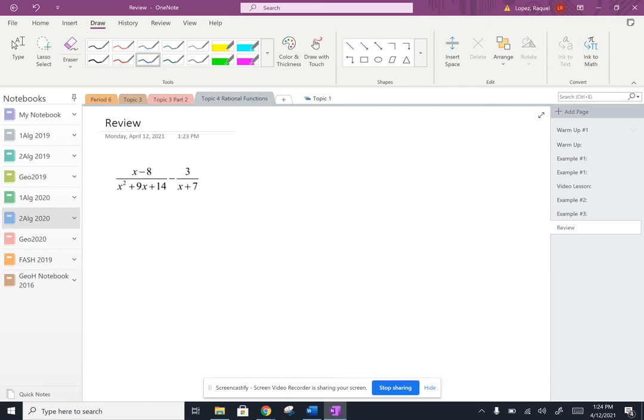Let's start off by factoring the denominator in this first fraction here. So it's a regular quadratic, so we're looking for two numbers or factors that add to 9 and also multiply to 14. And those are going to be 7 and 2.